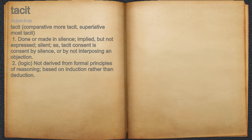Tacit. Adjective. 1. Done or made in silence, implied but not expressed; silent. As: tacit consent is consent by silence, or by not interposing an objection.